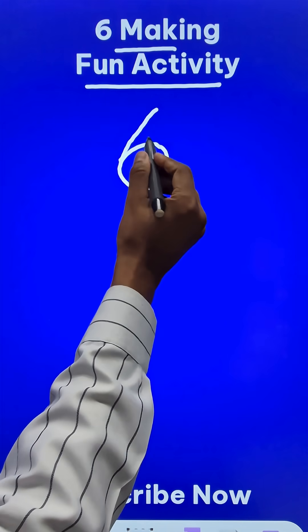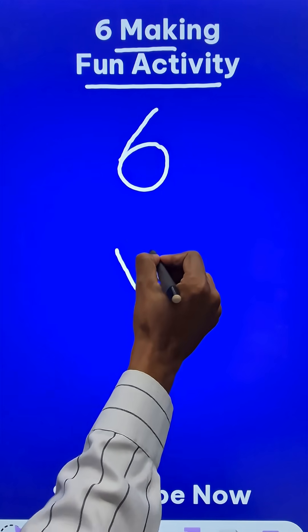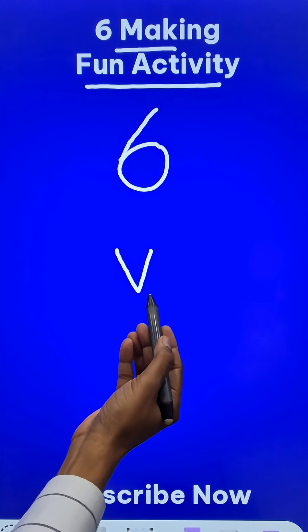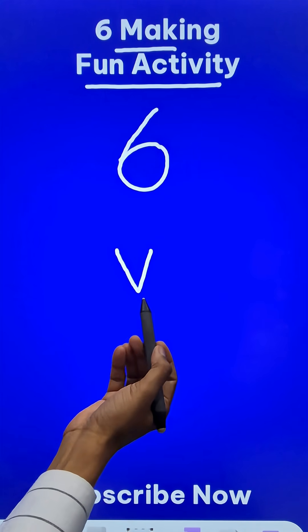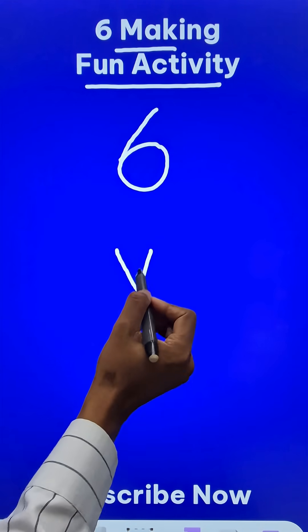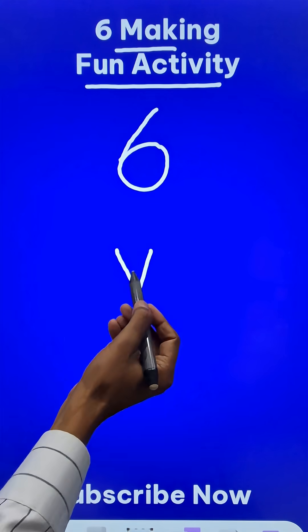Now in place of the circle draw a V and ask can you use the pen only once and make a six out of this? He will be stuck. There is no straight lines in this six so how do I make a six out of this?